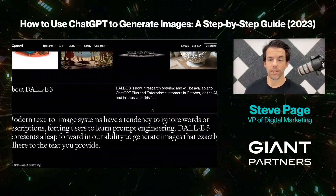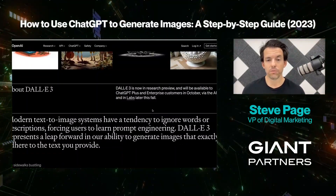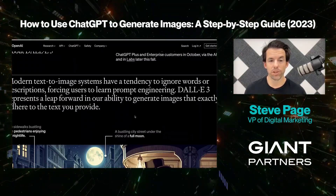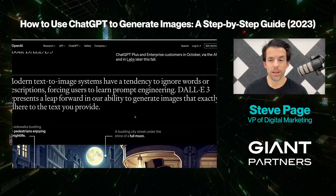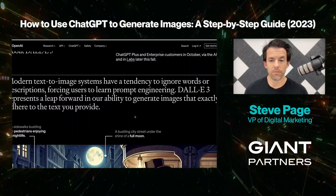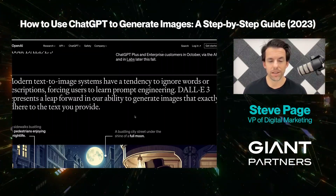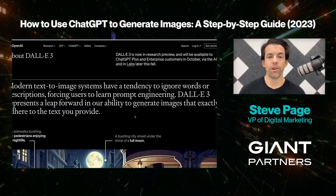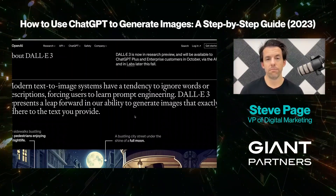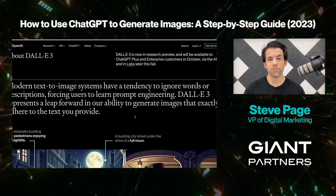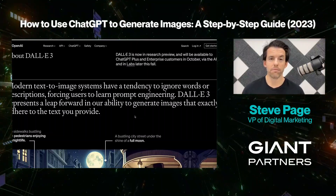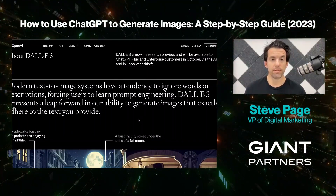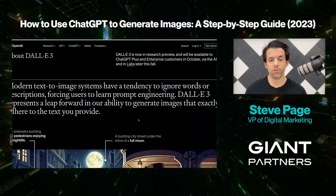Right now it's just in research and it's coming out soon in October 2023. Modern text-to-image systems have a tendency to ignore words or descriptions, forcing users to learn prompt engineering. DALL-E 3 represents a leap forward in our ability to generate images that exactly adhere to the text you provide. You can understand better nuances and context around your prompts, so you don't have to create these huge mega prompts. You can use fewer words, and ChatGPT can actually help you create prompts to get you what you're looking for.